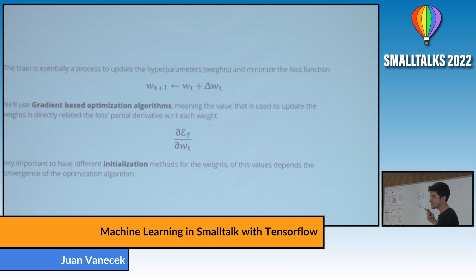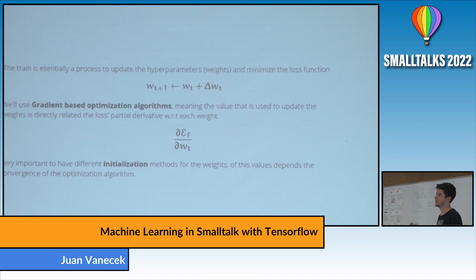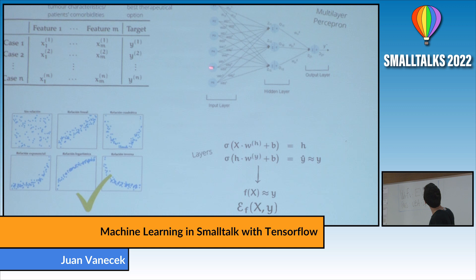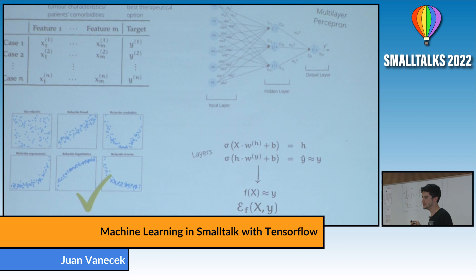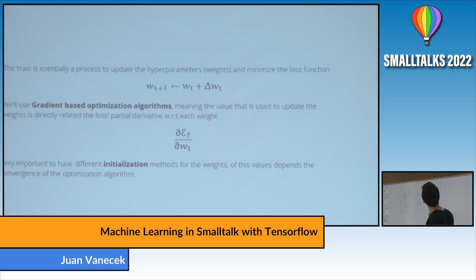The optimization algorithms we use are gradient-based, meaning the update delta is directly related to the derivative of the loss with respect to each weight. Computing all inputs and then computing derivatives to update each weight requires significant computation. It's also very important to have different weight initialization methods, since the weights need to start from some value and different options exist for that.